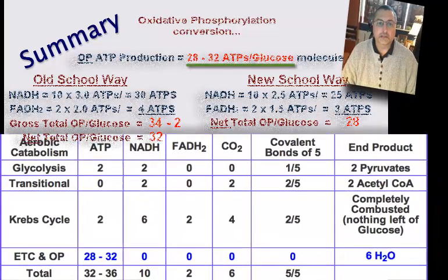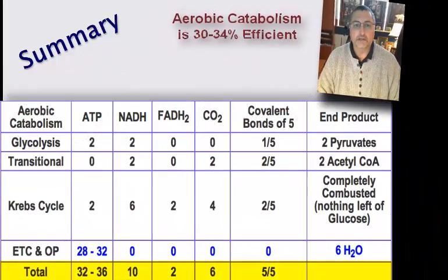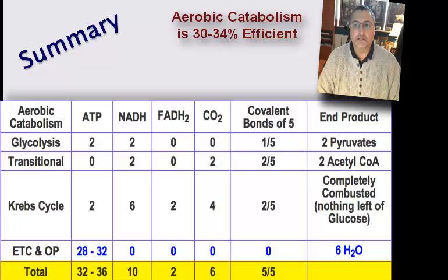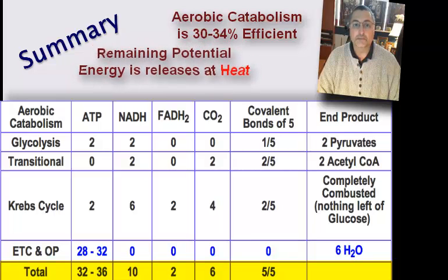This means that aerobic catabolism is somewhere between 30 and 34 percent efficient in converting potential energy within the covalent bonds of a glucose molecule into cellular energy in the form of ATP. The remaining energy is released as heat — a non-reusable energy that is essential to maintain a relatively high body temperature of 37 degrees C. While this seems inefficient, compared to the most efficient automobiles that function at about 25 percent, catabolism is remarkably efficient.